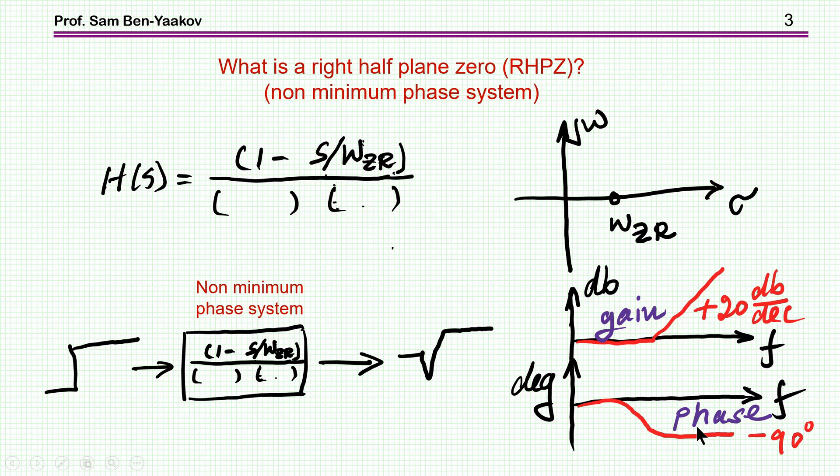But due to the minus sign, the phase is lagging rather than leading as in the regular zero. So in this case we have an extra lag here, which is making your life complicated as far as the compensator design goes and the feedback of the system. But I'm not going into this issue in this presentation.